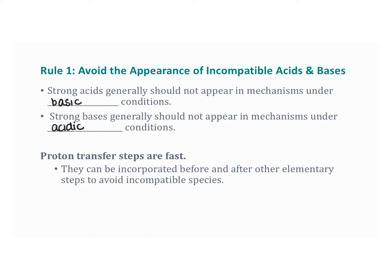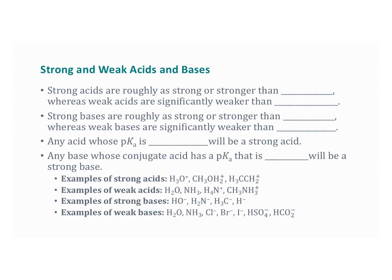To apply this rule correctly, we must be able to recognize strong acids and bases. You may recall from general chemistry that H3O+, the hydronium ion, is a strong acid, and OH-, or hydroxide, is a strong base. Those species are really convenient cutoffs for defining other strong acids and bases. Strong acids are roughly as strong or stronger than H3O+, and weak acids are significantly weaker than H3O+. Strong bases are roughly as strong or stronger than OH-, whereas weak bases are significantly weaker than OH-. Remembering these cutoffs, we can use pKa values to characterize acids and bases.